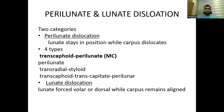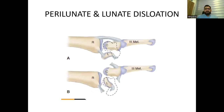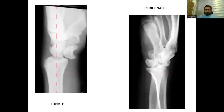Perilunate and lunate dislocations fall into two categories. In perilunate dislocation, the lunate stays in position while the carpus dislocates. In lunate dislocation, the lunate is forced volar or dorsal while the carpus remains aligned with the radius. Perilunate is divided into four types, but the most common is the transscaphoid perilunate type. On x-ray, the left side shows a lunate dislocation and the right side shows a perilunate dislocation.